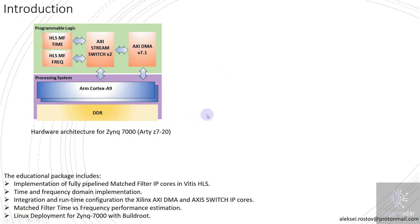The educational package includes implementation of a fully pipelined matched filter in Vitis high-level synthesis. Both implementations are available in time and frequency domain, with integration and runtime configuration of Xilinx AXI DMA and AXI switch IP cores. Performance estimation and analysis are included, and all IP cores run under Linux. Linux deployment for Zynq 7000 with Buildroot support is provided.